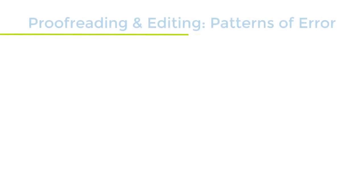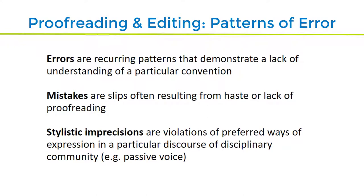After revising your paper's ideas and style, it's time to do some final proofreading and editing. There are a few different things you should be looking for. Errors may be hard to spot, since these may reflect a convention of grammar or spelling that you're not aware of. This is where getting another reader can be helpful. Another reader can help you spot patterns that show up in your writing. Everybody makes mistakes in their writing, and I'll try to suggest some ways you can spot those.